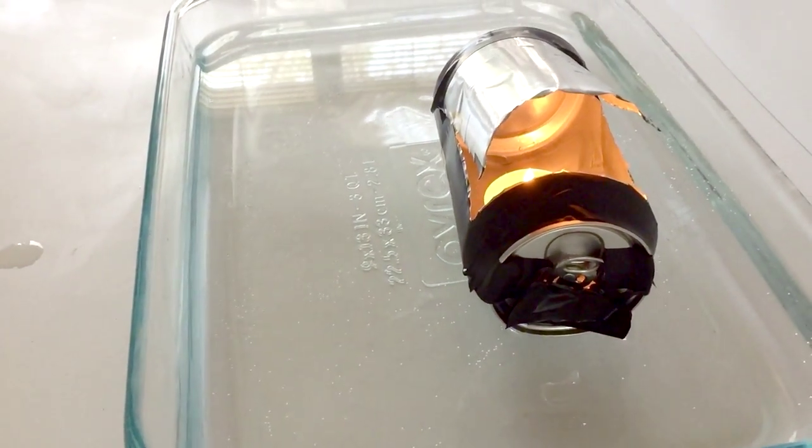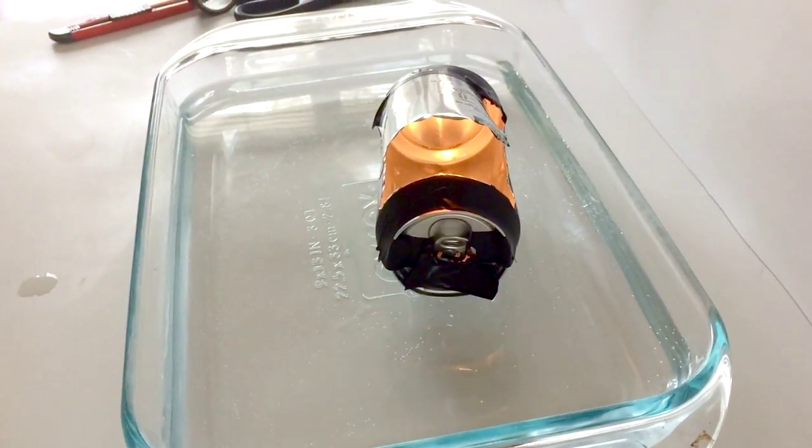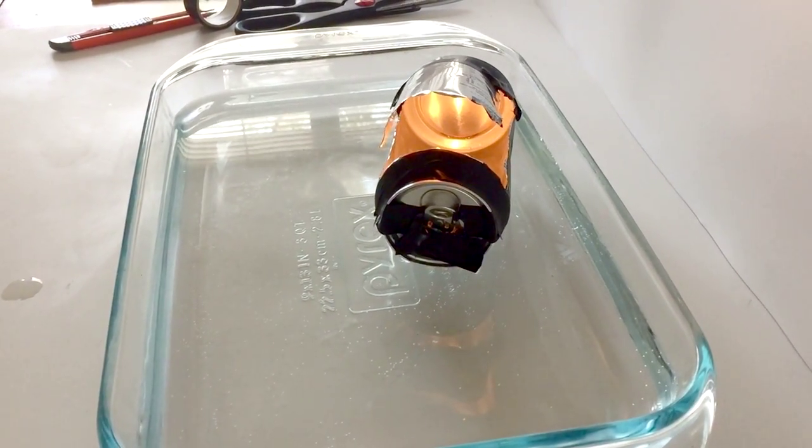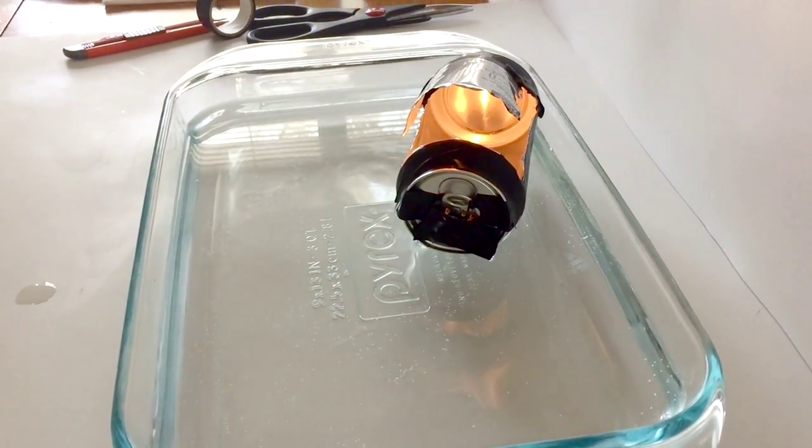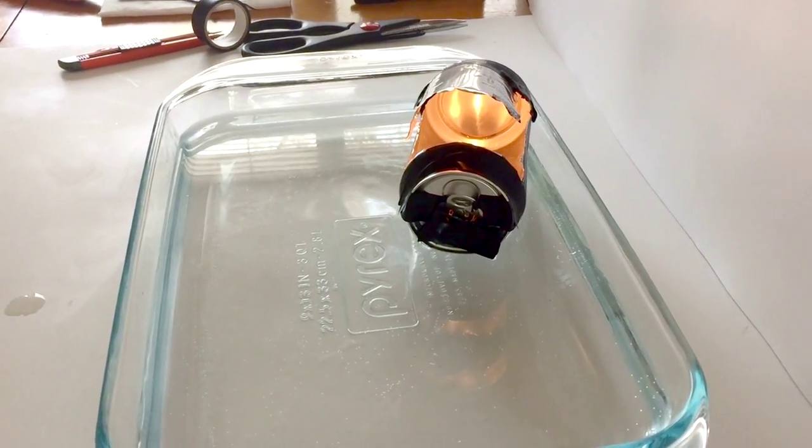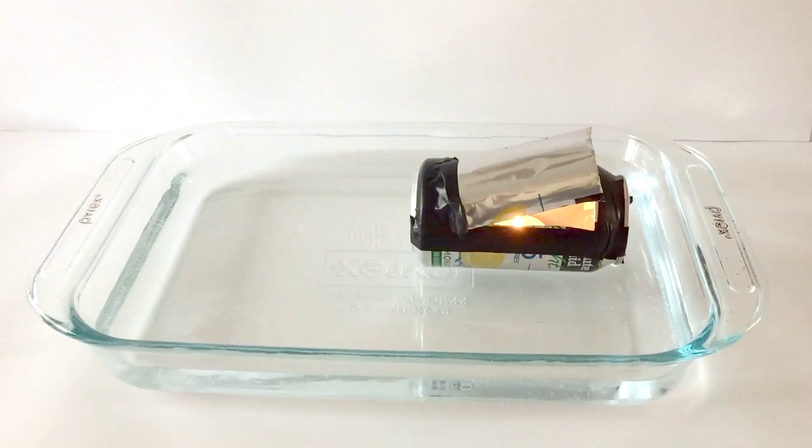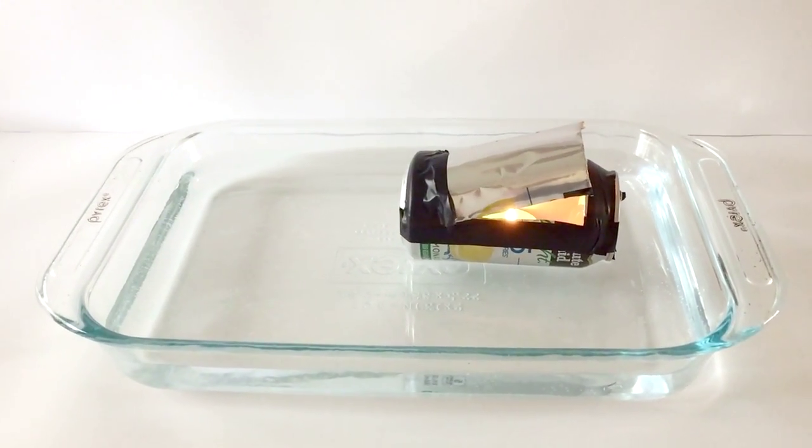The top speed for our candle boat depends on a couple different things: the force and balance of the boat between the forward force of the hot air and the counter force in the drag of the water. The drag is dependent on the shape of the boat, for us that's an aluminum can, and also the properties of the water and air and what proportion of the boat is in the water.